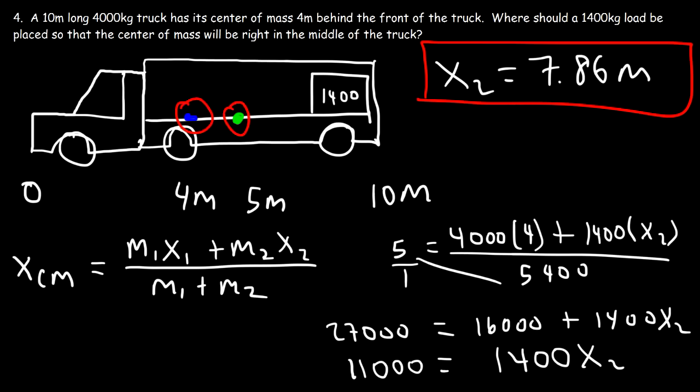So the load should be placed at around 7.86 meters from the front — still relatively close to the back of the truck, but not all the way at the back.